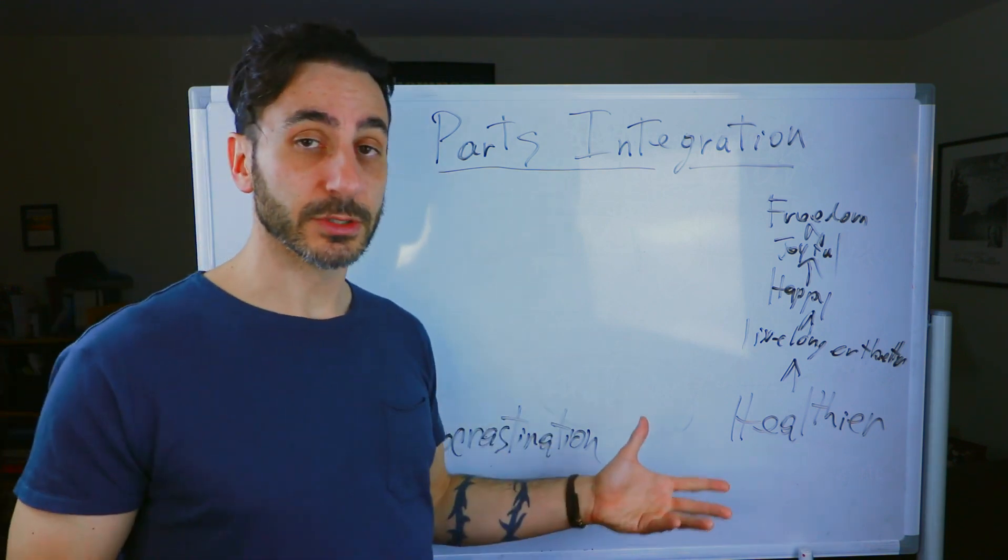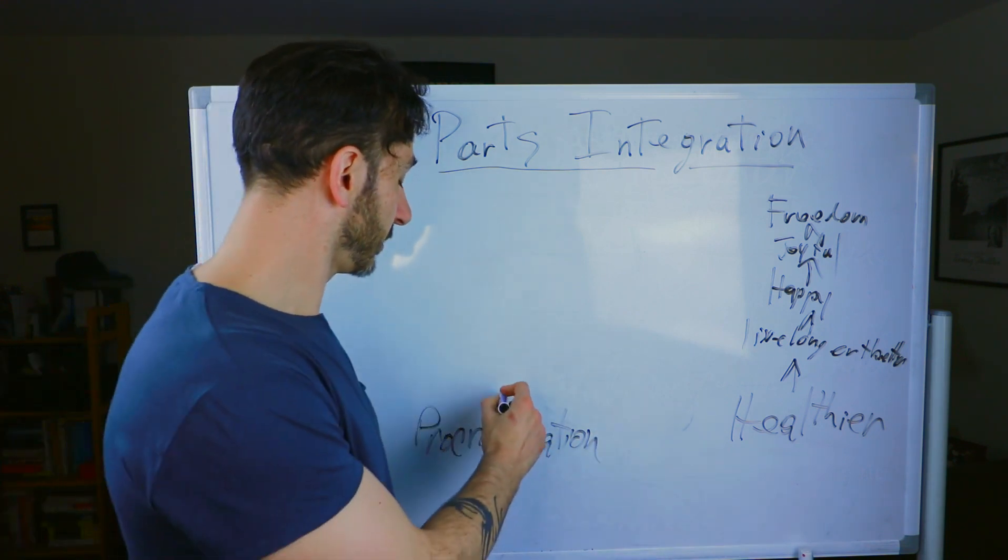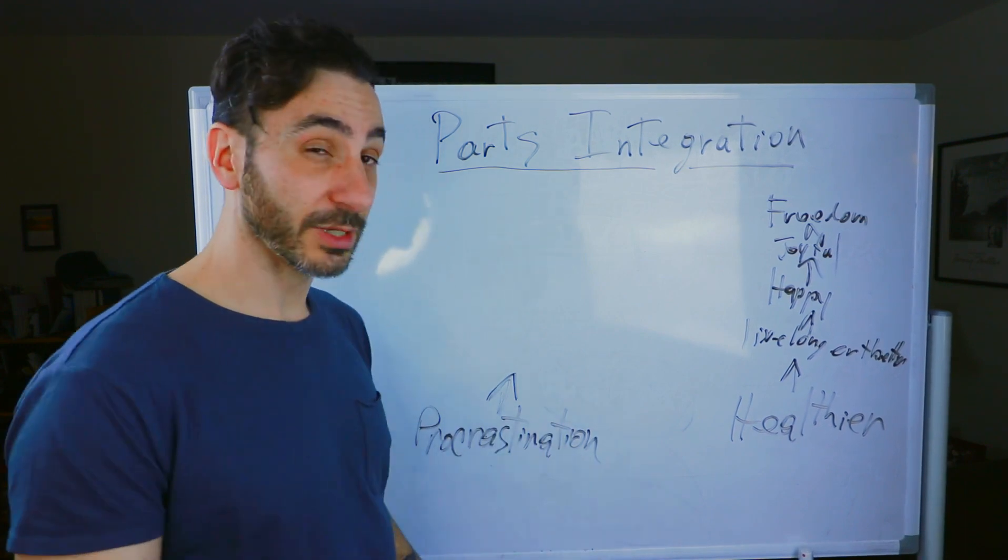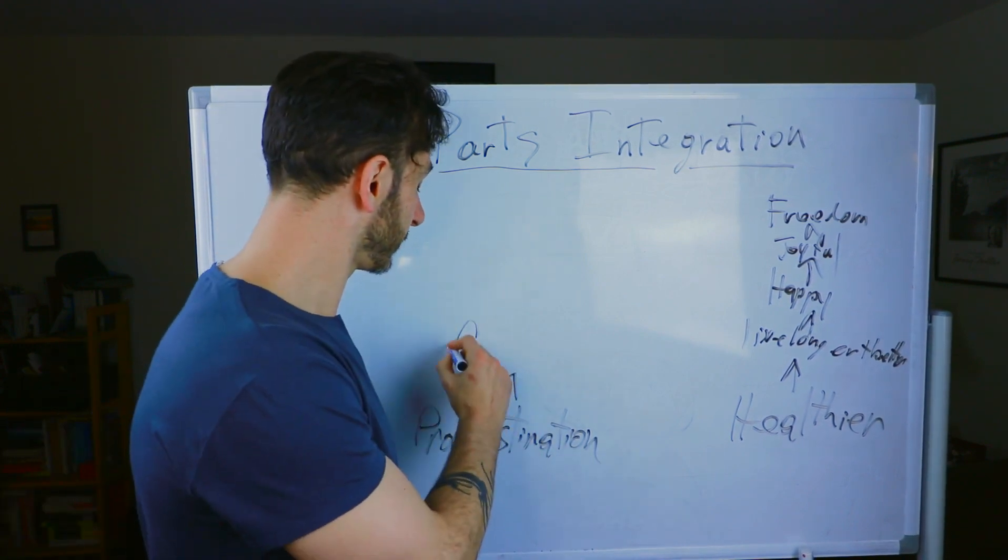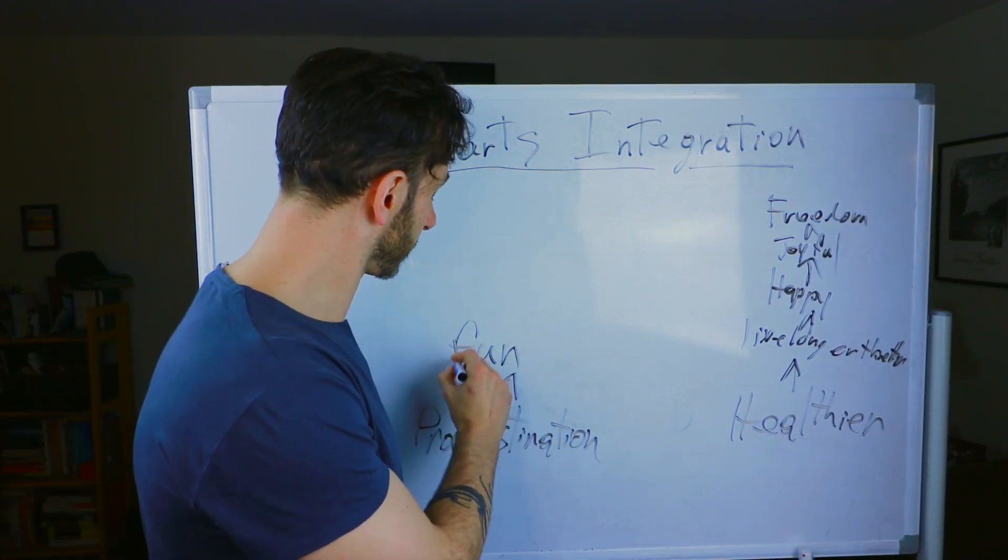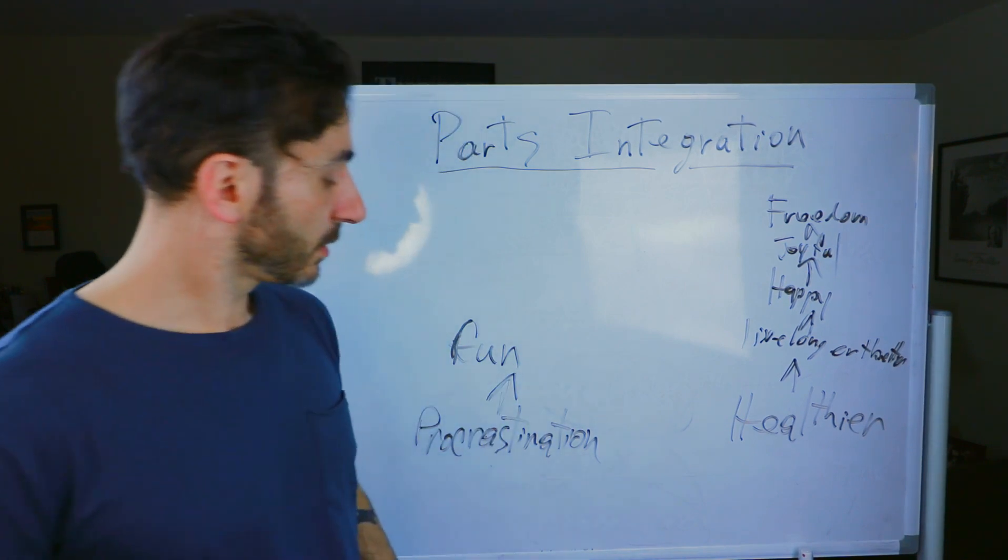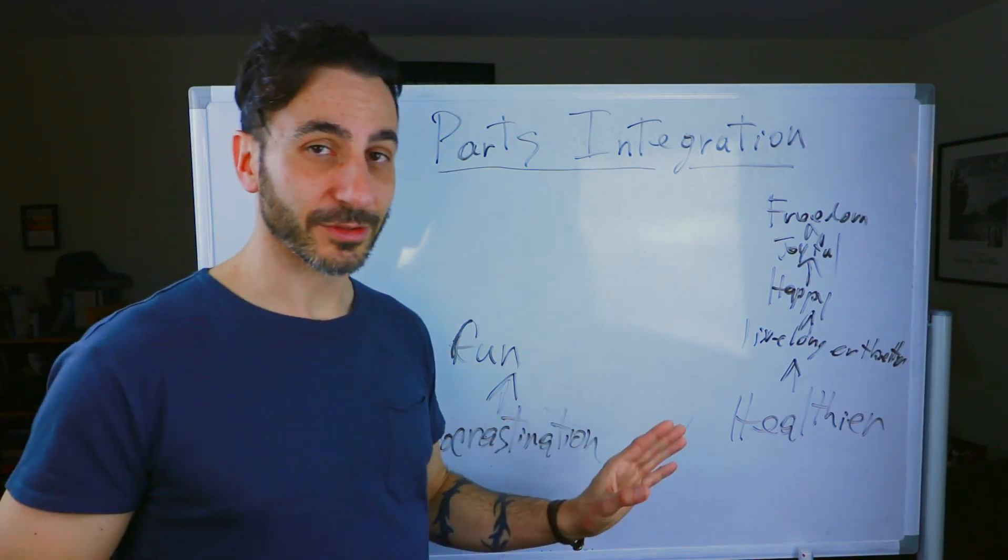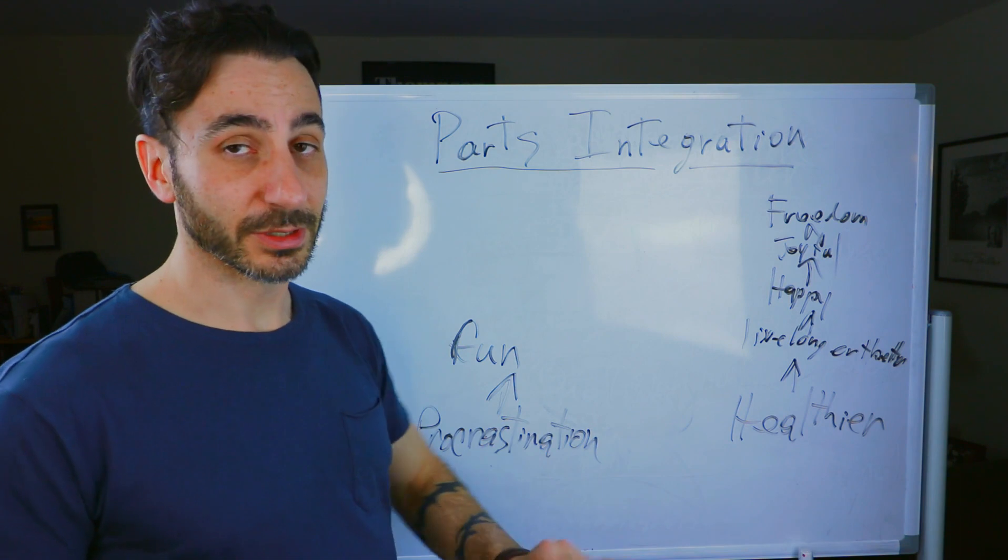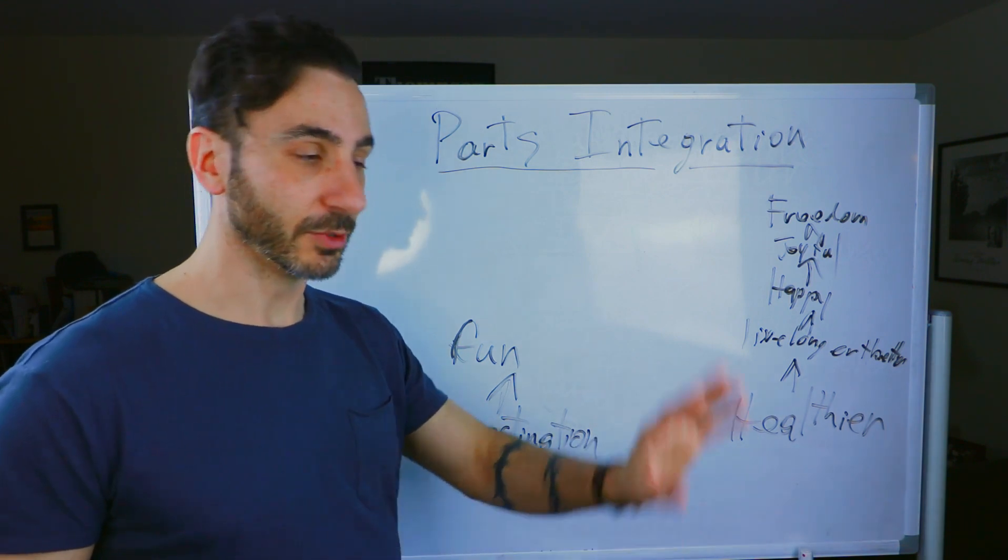Then take that value and still use it and grow that part of yourself up, which is common. It's a common thing that happens when you're doing a process like this. So what is a positive intent of procrastination? Well, maybe it's because I want to have fun. And by the way, when you're eliciting your positive intent, a lot of people first start off by saying it in a negative, what I don't want.